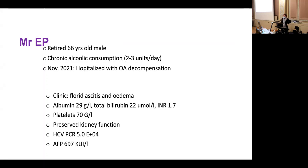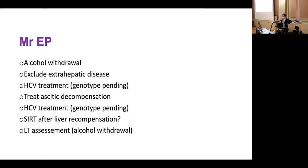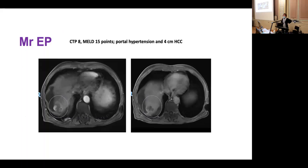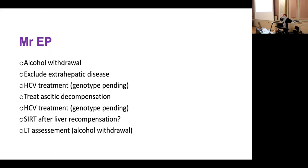A positive HBsAg was detected in this patient. Importantly and unfortunately, AFP was very elevated — more than 600. On MRI, a picture of wash-in and wash-out was visible, confirming an HCC of four centimeters. The patient has since stopped regular alcohol consumption.